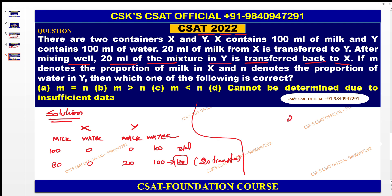Out of the 20 ml transferred back, how many units of milk are in it? That is important. Milk transferred = 20 × (20/120) = 1/6 of 20. Water transferred = 100 × (20/120) = 100/6 = 1/6 here. So milk part is 20 × (1/6) and water part is 1/6. Since milk fraction is 1/6, the remaining milk fraction in Y is 5/6.